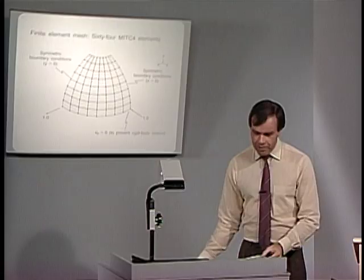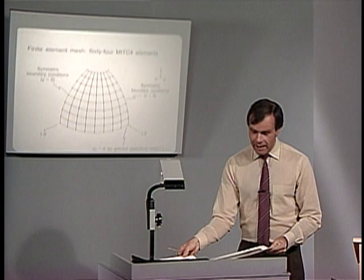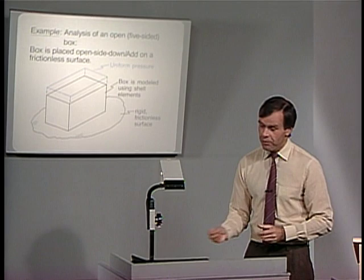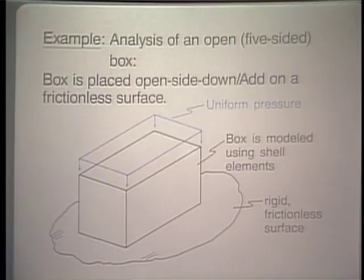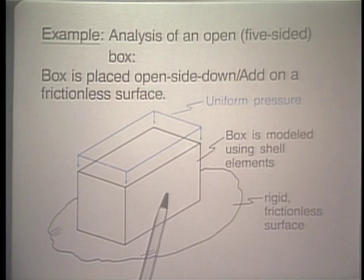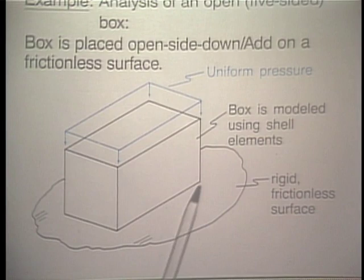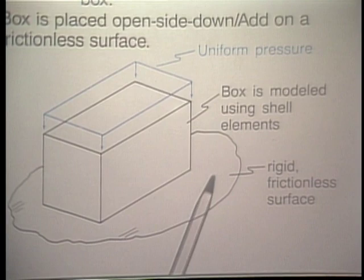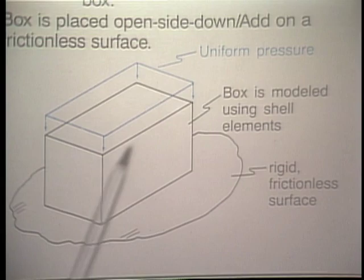As a second example, I'd like to consider the analysis of an open box, a five-sided open box shown upside down with the open side down, lying on a rigid frictionless surface. On top, pressure is applied to the face. The box is modeled using shell elements. The point of this problem is to discuss how we model the box using director vectors, five degrees of freedom, and six degrees of freedom, as discussed in the earlier lecture.